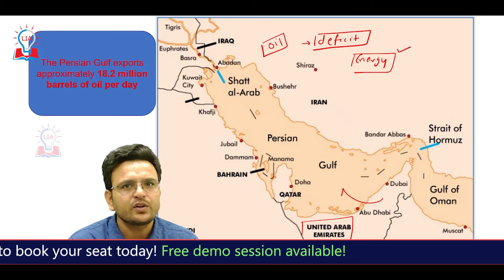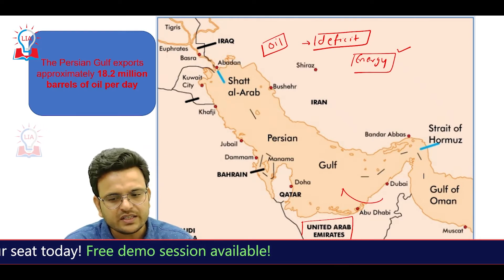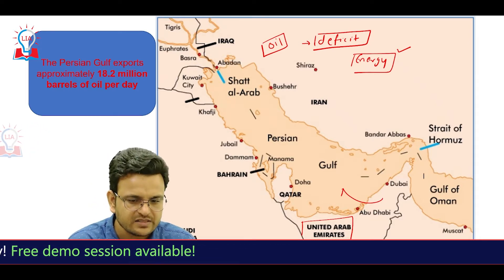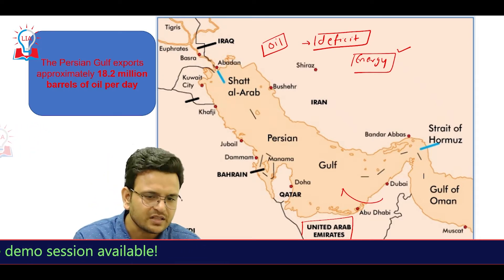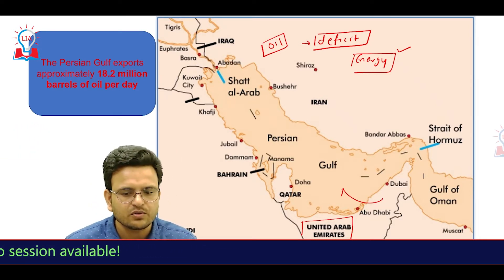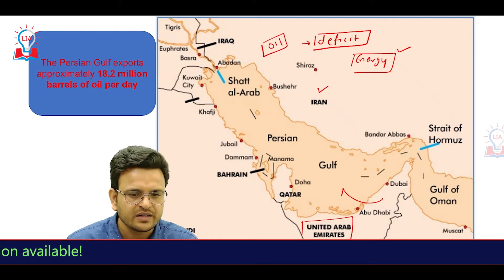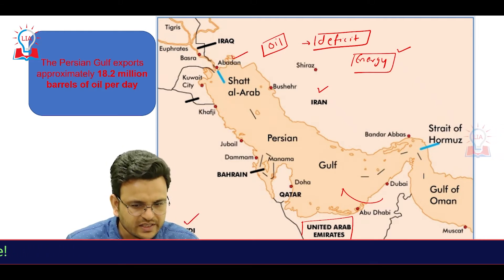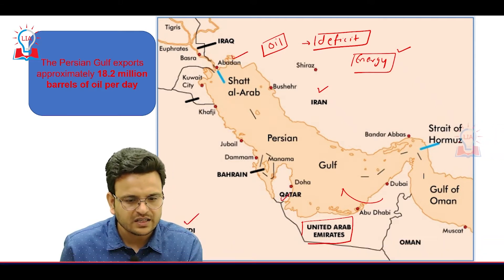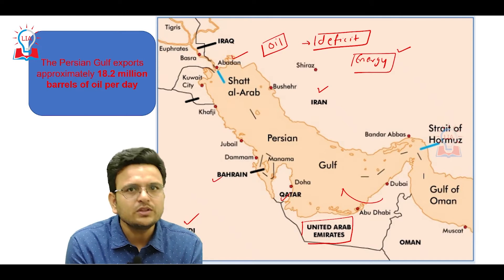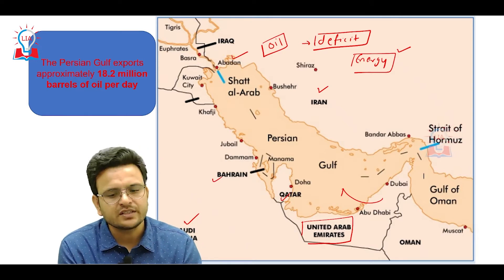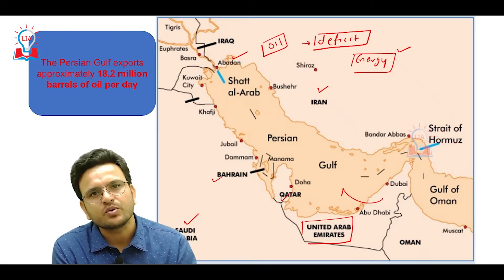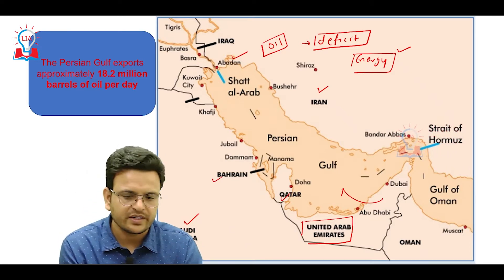To fulfill energy security, India has to improve its relationship with other countries like Iran, Iraq, Saudi Arabia, Qatar, and Bahrain. Among all those countries, UAE is also very important for India.